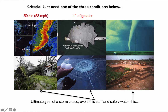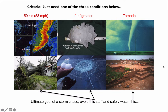If hailstones this large hit you, you'll be killed — but only one inch is required to be considered severe. Finally, if the thunderstorm produces a tornado, it completely trumps the severe thunderstorm warning and goes straight to a tornado warning. You don't need all three criteria — just one of the three for the Storm Prediction Center to issue a warning.